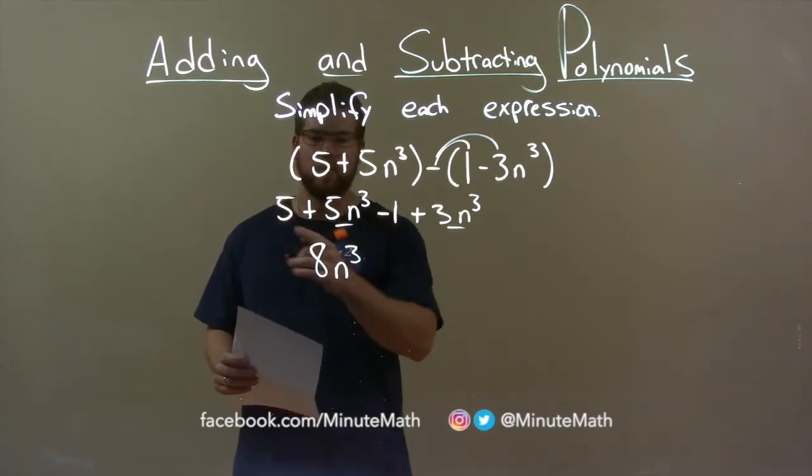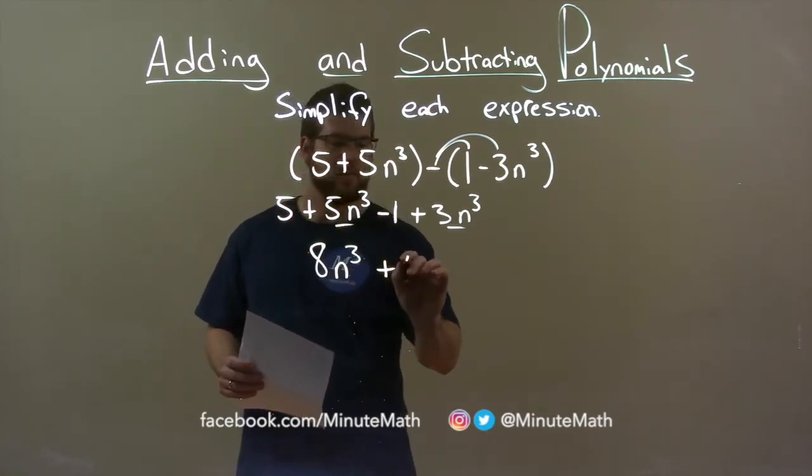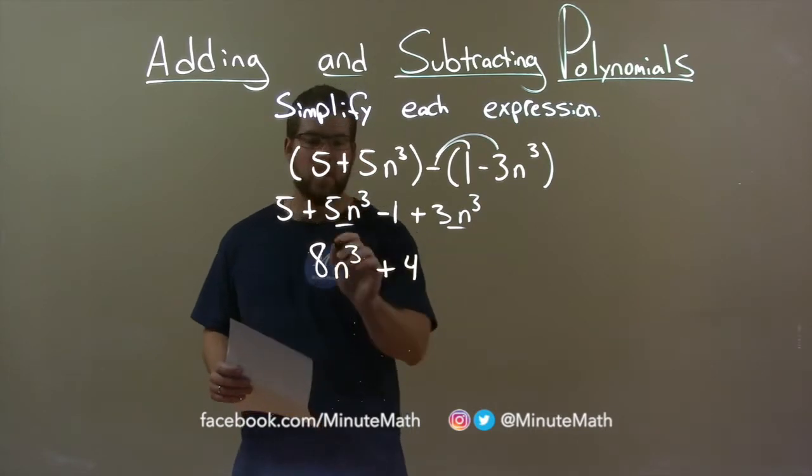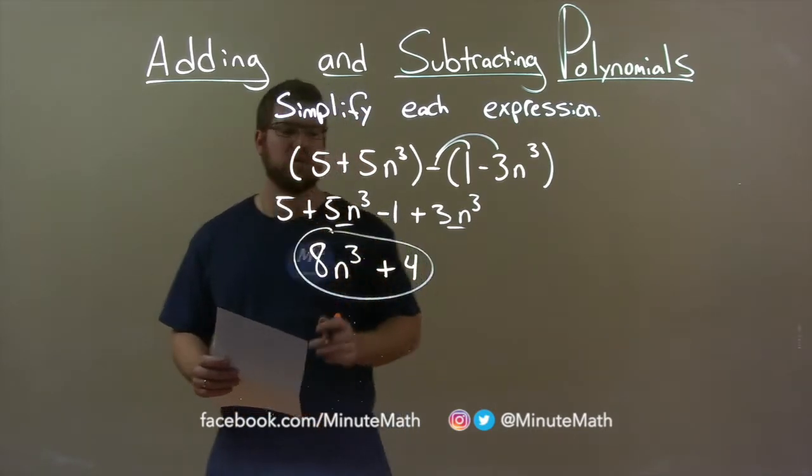Now we have 5 and a 1, so 5 minus 1 is a 4, and we have a plus 4 here, and there we have it. Our final answer: 8n to the third plus 4.